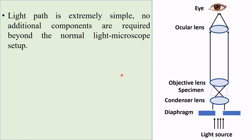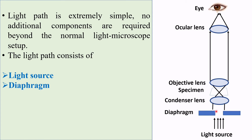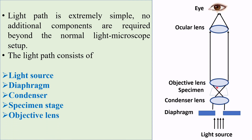The light path of a brightfield microscope is extremely simple. No additional components are required beyond the normal light microscope setup. The light path consists of: first, the light source; then the diaphragm; followed by the condenser lens; then the specimen stage; the objective lens; and finally the ocular lens — the same as a typical light microscope.